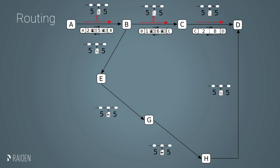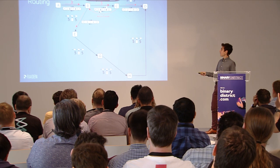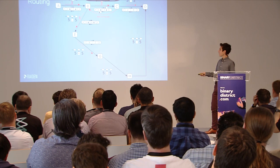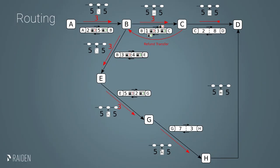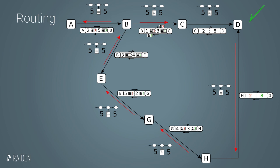Then C tries to route the transfer to D but there is not enough capacity — he only has two tokens but needs to route three. So that doesn't work. He sends what we call a refund transfer back to B, and then B has to find another route. There is only one: sending it to E, where there is enough capacity. E sends it to G — still enough capacity — and the protocol continues like this, sending the transfer up until the target. Then following the messages for multi-hop transfers, we send the secret backwards. The amount is unlocked and the capacity changed for the channel, all the way back to the initiator.